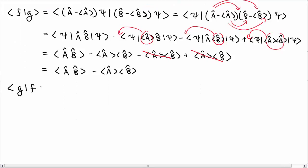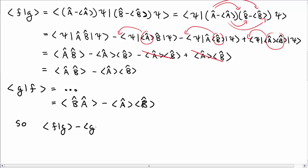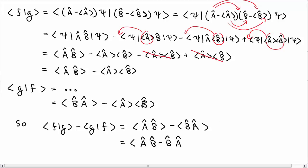The second term involves switching G and F. The result is ⟨B-hat A-hat⟩ minus ⟨A⟩⟨B⟩. Evaluating the difference — which is what appears on the right-hand side — the last terms cancel, leaving ⟨A-hat B-hat⟩ minus ⟨B-hat A-hat⟩. This can be written compactly as the expectation value of the commutator between A-hat and B-hat.